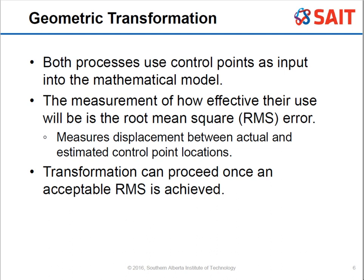Both transformation types need control points to input into the model. A control point means finding one feature on your image and the same feature on your map, placing a point on both, then attaching them — essentially moving the point on your image on top of the map so those points match up.